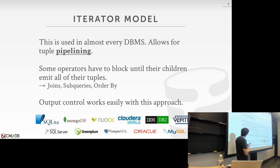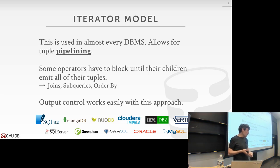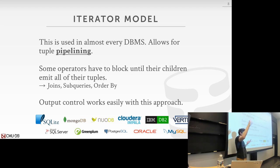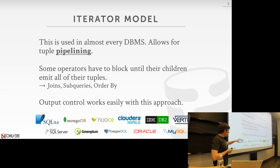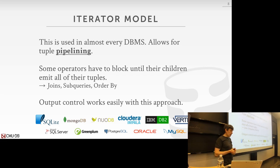One nice thing about the iterator model is that output control like LIMIT clauses is super easy: the parent only calls next() 10 times to get 10 tuples, then stops. Parallel queries also work really well with this model — we'll cover next class how to run operators on different threads or different machines at the same time.